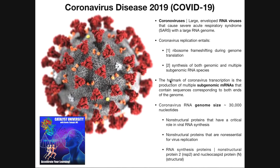A hallmark of the coronavirus transcription process is that we're going to see many subgenomic mRNAs — these are different-sized mRNAs that are created from the original RNA genome. We'll look at that in more detail on one of the next slides.